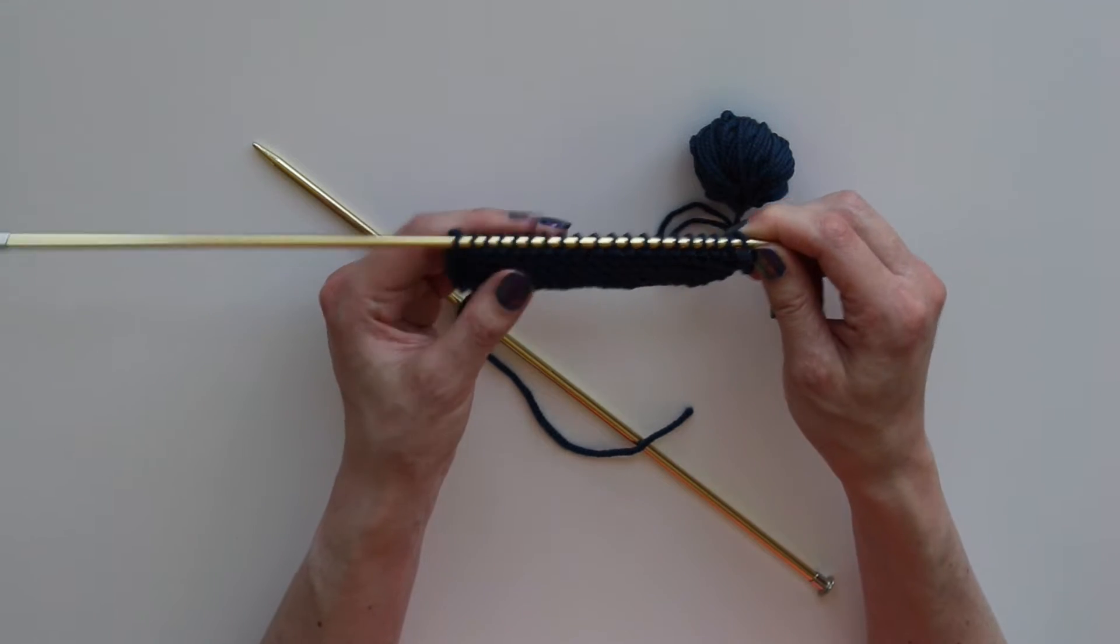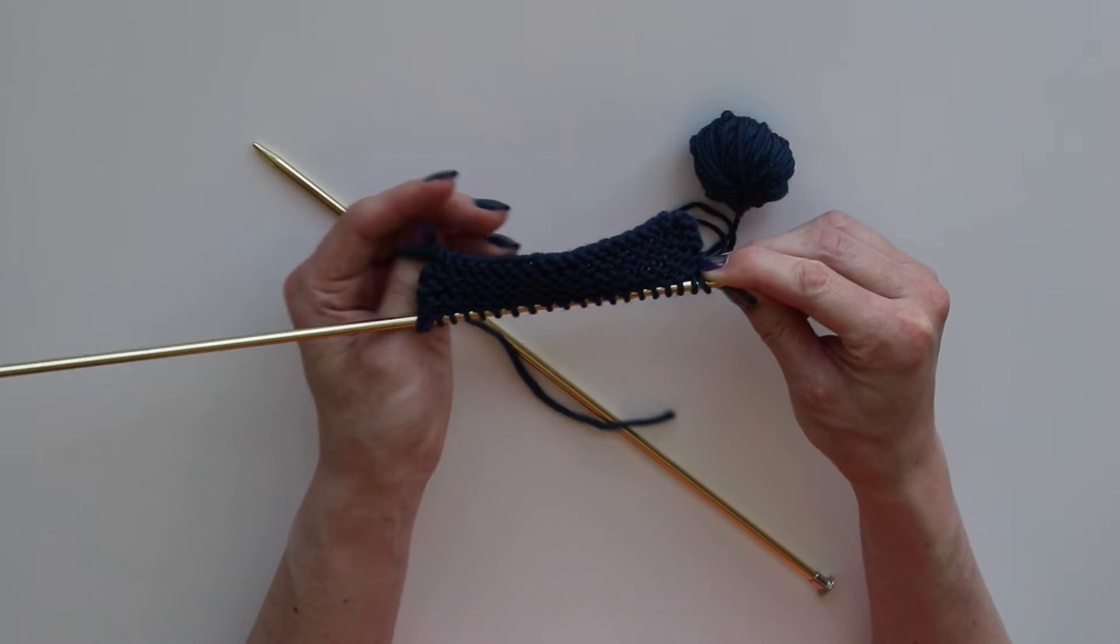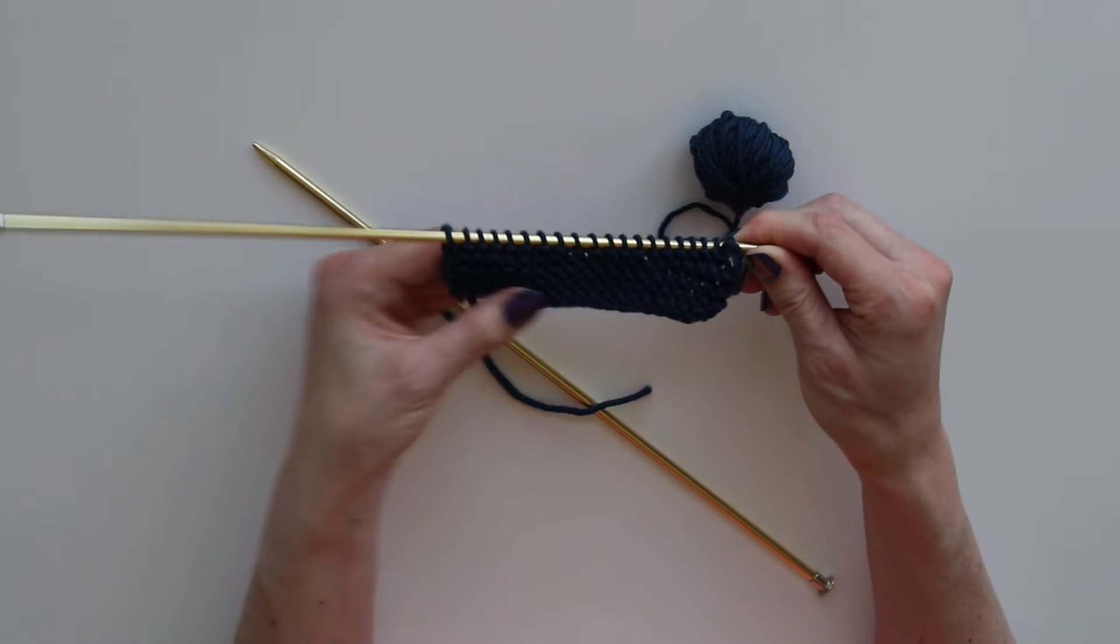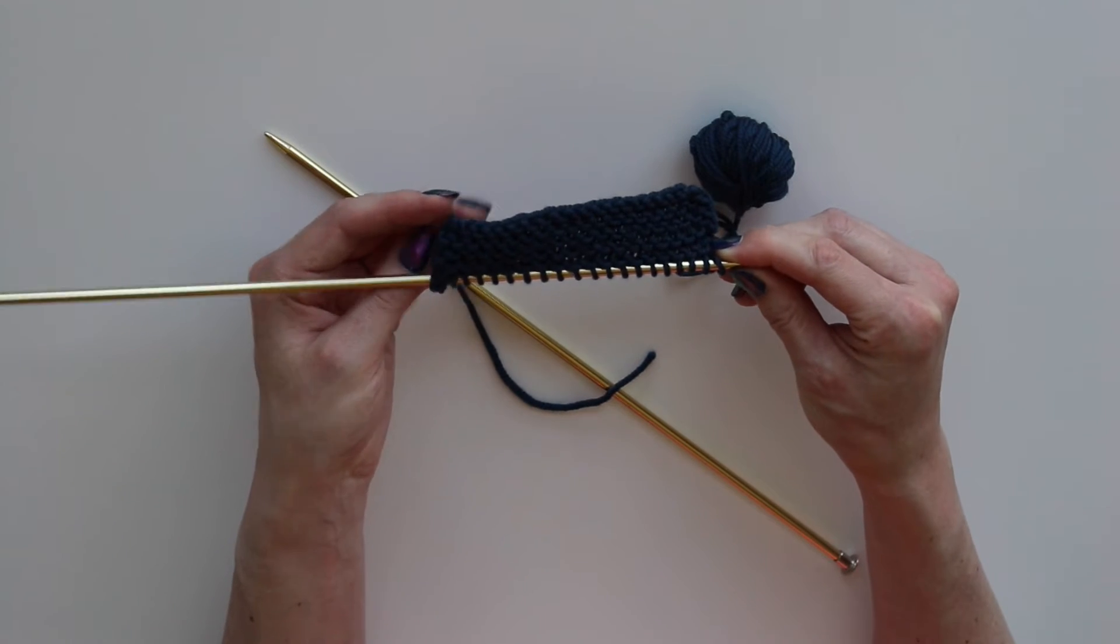On any given side of the garter stitch, it looks like alternating rows of knit stitch, the flat V shapes, and purl stitch, the little bumps.